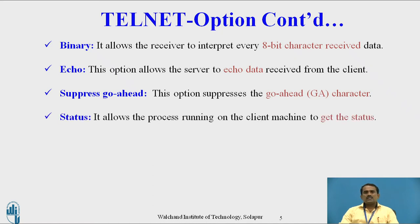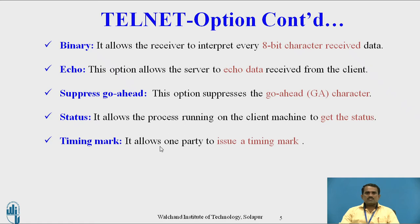Next is suppress go-ahead. This option suppresses whatever data they want to transfer; we use suppress go-ahead to transfer the data to the next user. Next is status — it allows the process running on the client machine to get the status of how much data is already transferred and how much data we want to transfer.